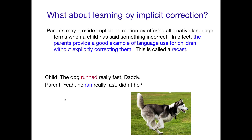Here's an example: the child says 'the dog runs really fast, daddy,' and the parent responds, 'yeah, he ran really fast, didn't he?' The parent recasts the incorrect form — 'runs' — into the correct past tense form — 'ran' — using the same words to highlight for the child the correct way to express what they intended to say.